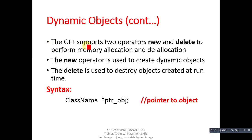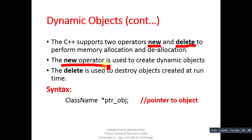C++ supports two operators: first is 'new' and second is 'delete', to perform memory allocation and deallocation. The 'new' operator is used to create dynamic objects, whereas 'delete' is used to destroy objects created at runtime.